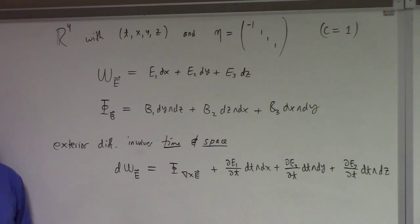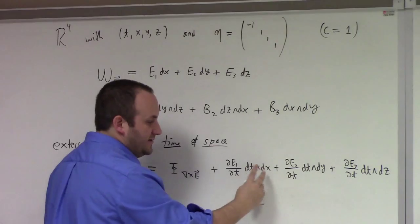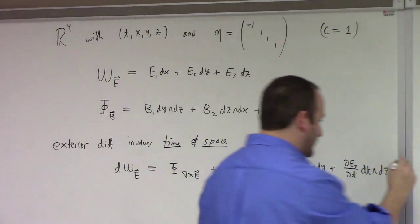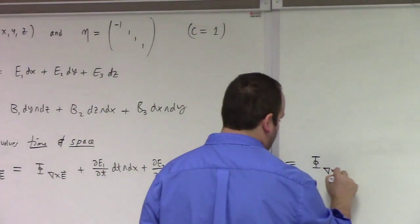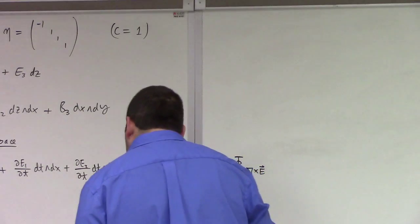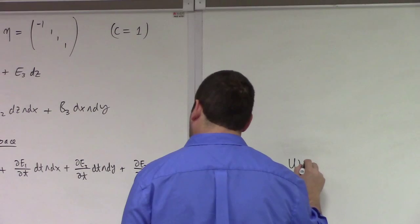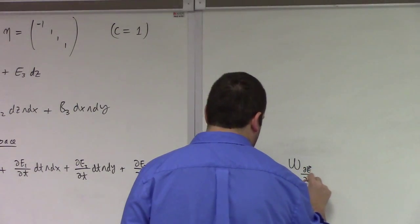Can you rewrite those in terms of a work form or something? Look at this. If I take the wedge product and just twist it a bit, what do we got? We've got the flux form of the curl of E minus the work form of partial E partial t wedge dt.